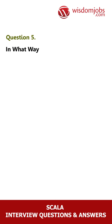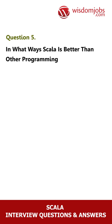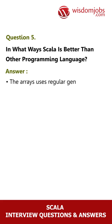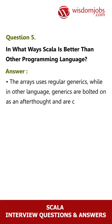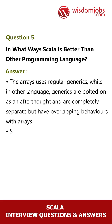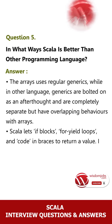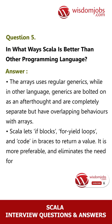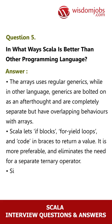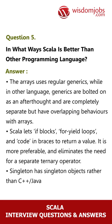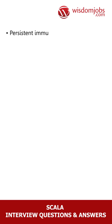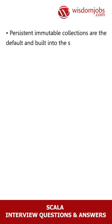Question 5: In what ways is Scala better than other programming languages? Answer: Arrays use regular generics, while in other languages generics are bolted on as an afterthought and are completely separate but have overlapping behaviors with arrays. Scala lets if blocks, for yield loops, and code in braces return a value — this is more preferable and eliminates the need for a separate ternary operator. Scala has singleton objects rather than C++, Java, C# classic static — it is a cleaner solution. Persistent immutable collections are the default and built into the standard library.